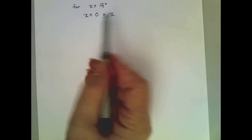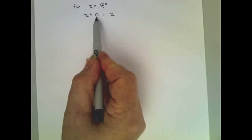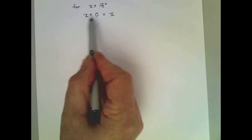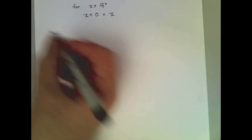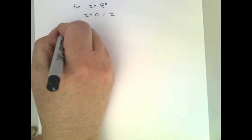First of all, notice this 0 represents a vector of size n whose components are all 0s. Otherwise, it doesn't even make sense because we could not add a scalar to a vector. So, the answer is always true. Let's prove it.